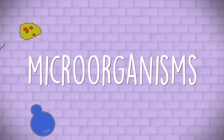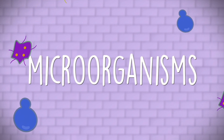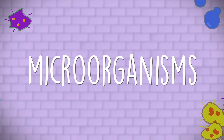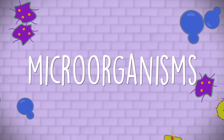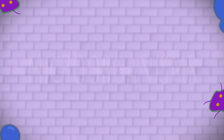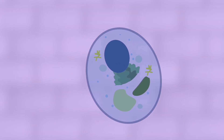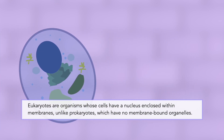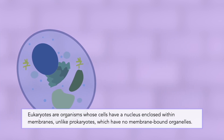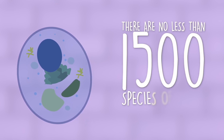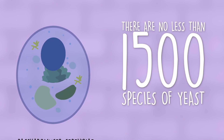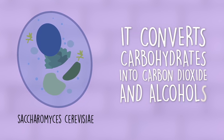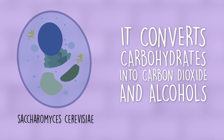So, microorganisms — the little lovelies that make fermentation possible. They are our friends, our little pets who make alcohol for us. As a homebrewer, yeast is the microorganism we appreciate the most. Yeast are eukaryotes just like us; however, unlike us, yeast are single-celled microorganisms classified as fungi. There are no less than 1,500 species of yeast on Earth, with Saccharomyces cerevisiae being one of the most cherished, as it converts carbohydrates to both carbon dioxide and alcohols during fermentation.